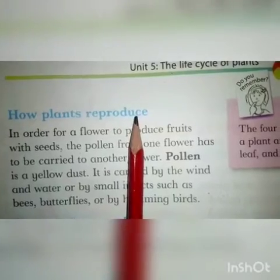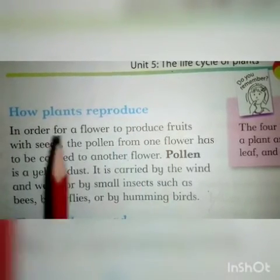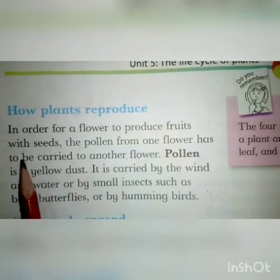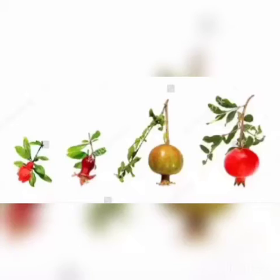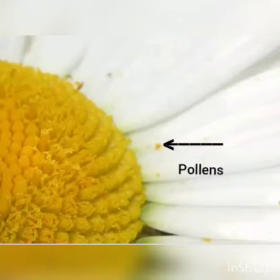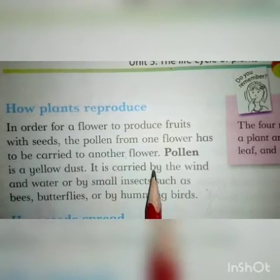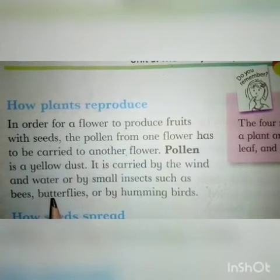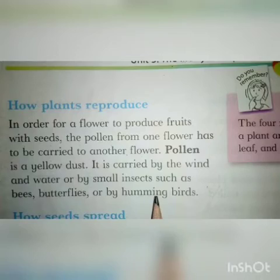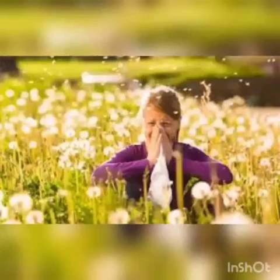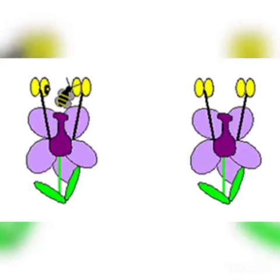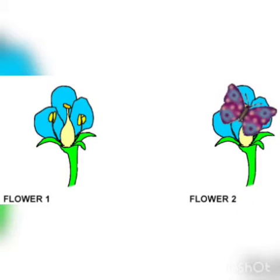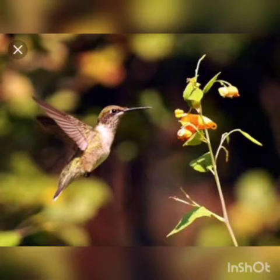How plants reproduce. In order for a flower to produce fruits with seeds, the pollen from one flower has to be carried to another flower. جب پھولوں کو بیجوں کے ساتھ پھل پیدا کرنے ہوتے ہیں تو pollen ایک پھول سے دوسرے پھول پر منتقل ہوتا ہے۔ Pollen is a yellow dust. It is carried by the wind and water or by small insects such as bees, butterflies, or by hummingbird. Pollen ایک yellow dust ہے۔ یہ ہوا، پانی اور چھوٹے کیڑے مکوڑے جیسے کہ شہد کی مکھیوں، تتلیوں اور hummingbird کے ذریعے منتقل ہوتے ہیں۔